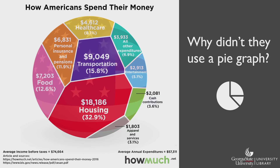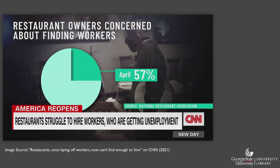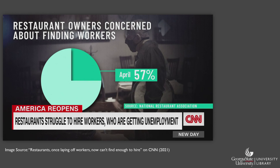Sometimes folks may not be trying to mislead and just get caught up in trying to be creative when creating data visualizations. For example, there is a circle broken up into different categories of items Americans spend their money on, but they're all different shapes, so it's difficult to tell the size of each section unless you read the data values — it would have made more sense to just use a traditional pie chart. In other incidents, the chart designer may choose the correct type of chart but not make it correctly, like a graph used in a CNN news segment. The chart is supposed to demonstrate that 57% of restaurant owners are concerned about finding workers, but the pie chart is only showing about 25%.